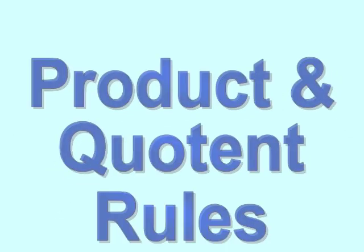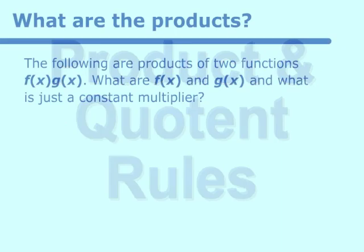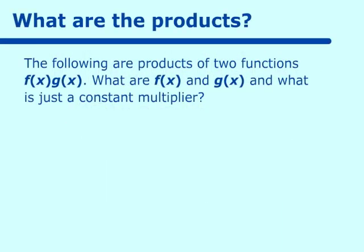This lesson is on product and quotient rules. We are looking at two functions which make a product, f of x and g of x. We are going to look at what could be f of x, what could be g of x, and what could be a constant multiplier, which we will factor out when we do product and quotient rule for derivatives. On problem a, y equals x sine x: x is our f of x and sine x is our g of x.